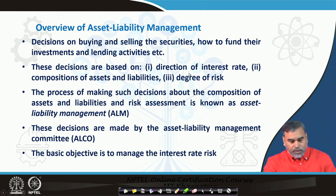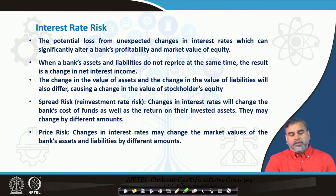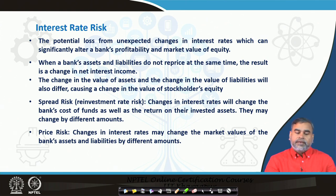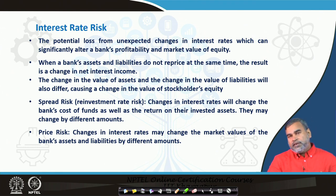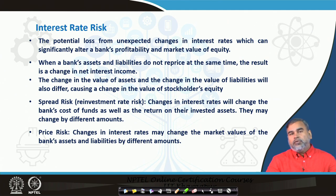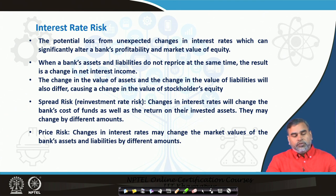How does that particular thing work? Interest rate risk is: if there is a change in the interest rate in the future, what is the potential or expected loss the bank can have in terms of their profitability and the market value of equity. If there is a change in the interest rate, it will affect the price of those assets on both the asset side and the liability side. Whatever return the banks get from assets gets affected, and the cost the bank incurs on different liabilities like deposits also gets affected. So we are trying to find out what the expected loss the bank can incur due to a change in the interest rate is — that is basically measured through interest rate risk.